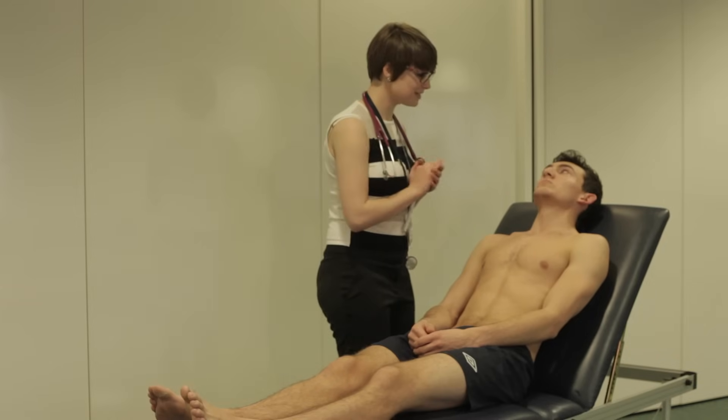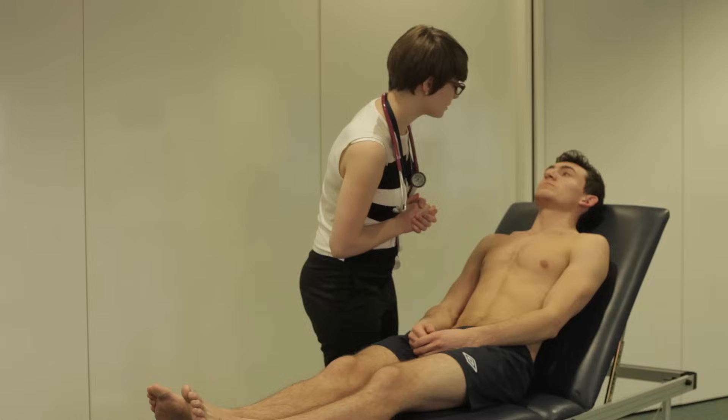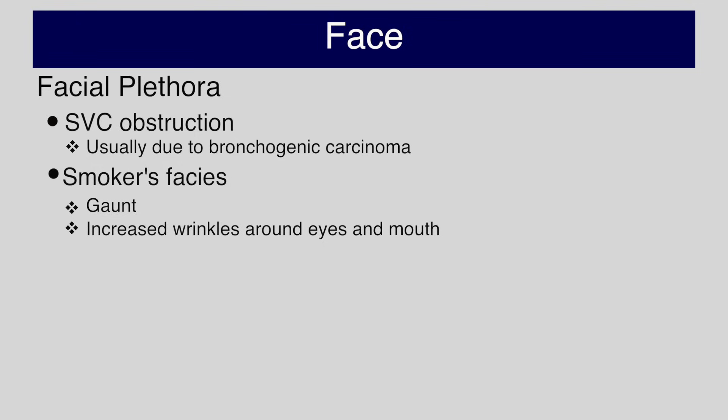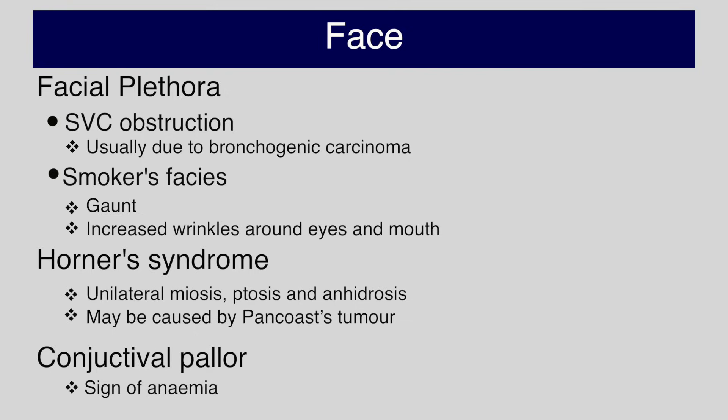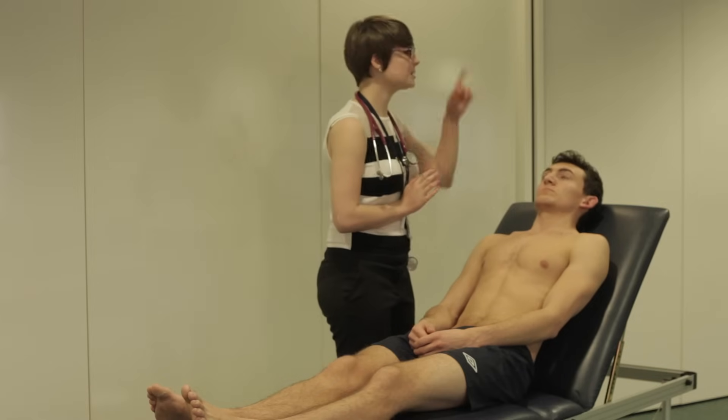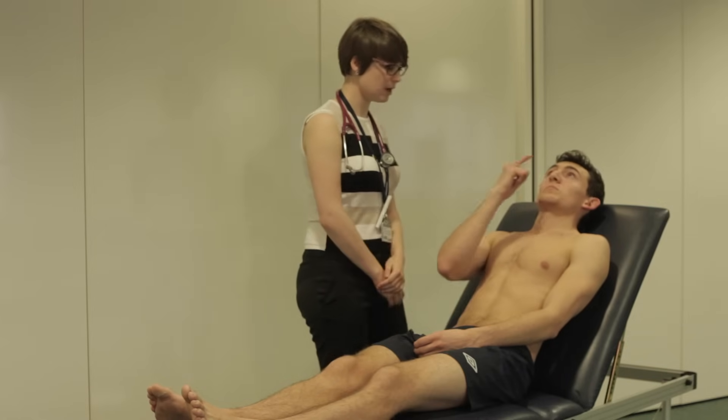The doctor is looking for facial plethora, which is sometimes present in smokers and SVC obstruction. The doctor also compares the size of the pupils and the degree of ptosis and anhidrosis, which can indicate Horner's syndrome. Horner's syndrome and SVC obstruction can both be caused by Pancoast's tumour. The doctor will now check for conjunctival pallor, which is a sign of anaemia.